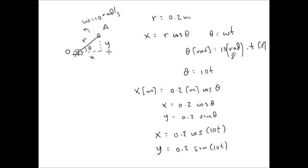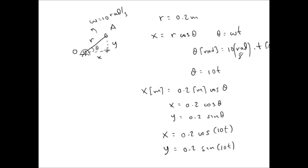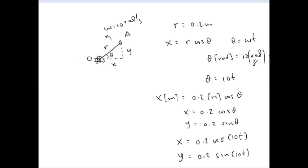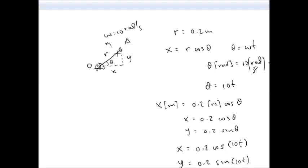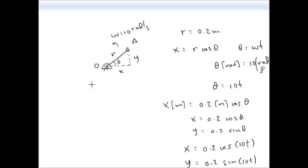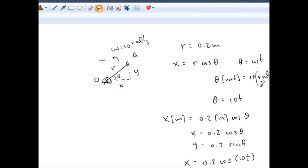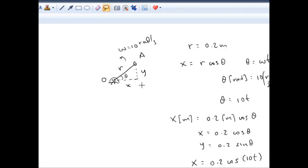Suppose you want to plot the x and y coordinates of a point on the end of a link, or end of a stick that's spinning around a fixed point at a constant angular speed. Let's say the stick is 0.2 meters long and the angular velocity is 10 radians of rotation per second.